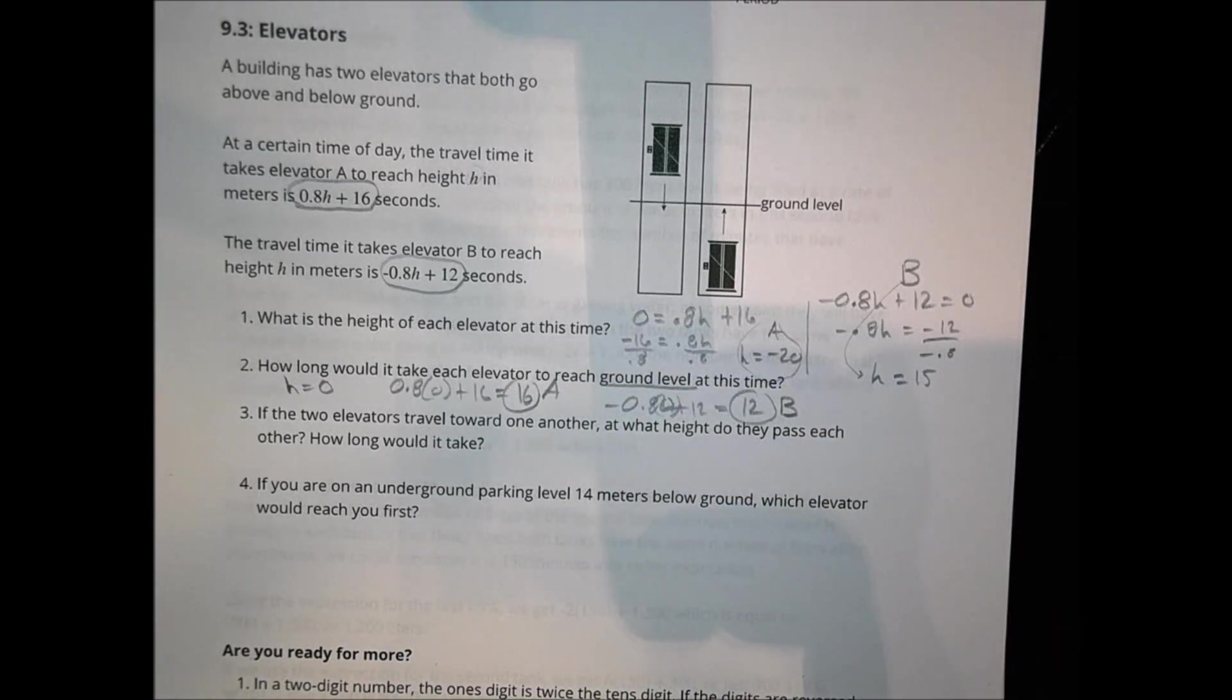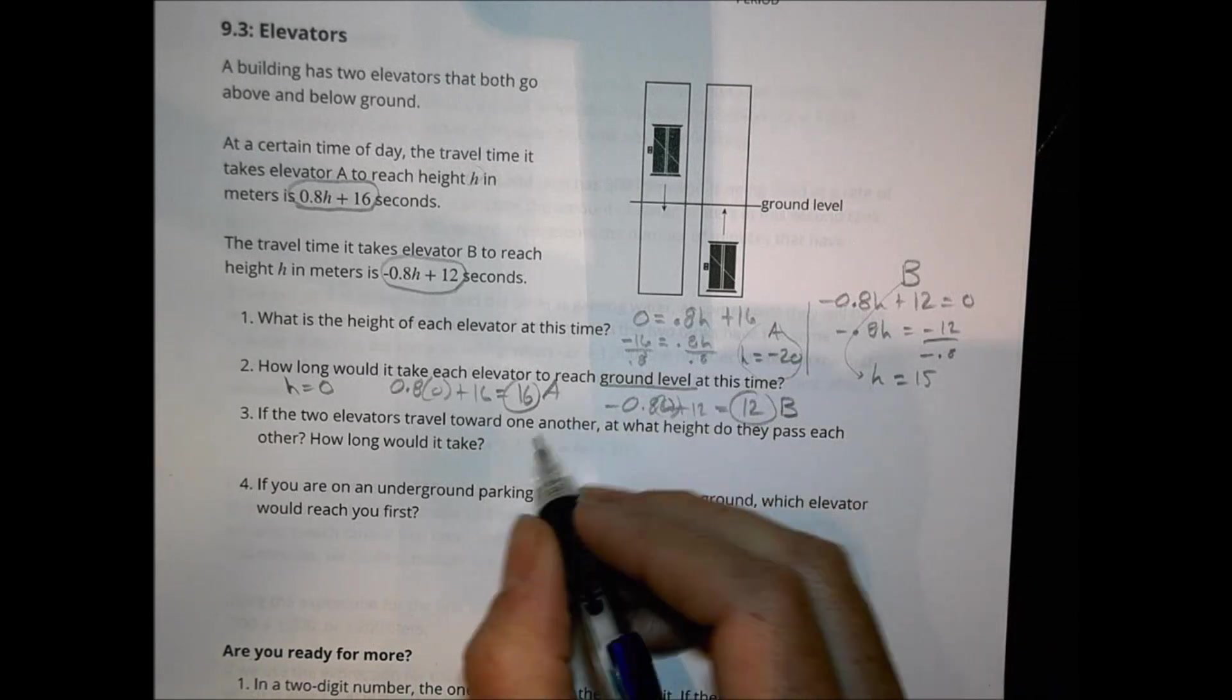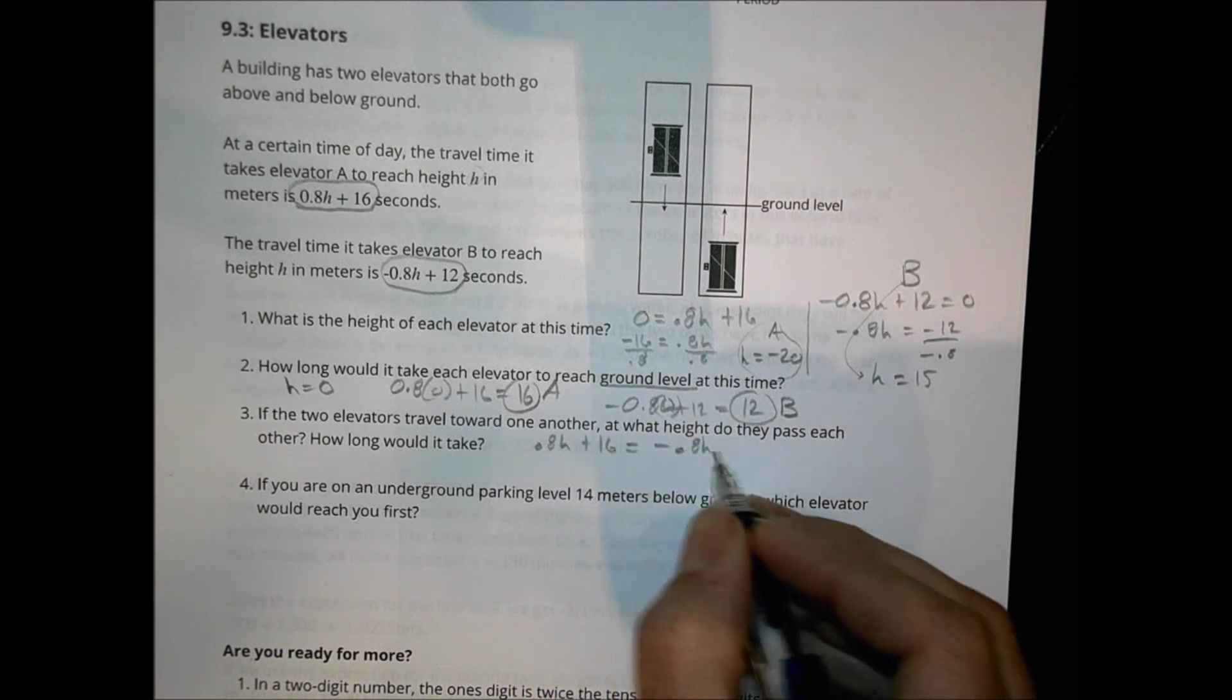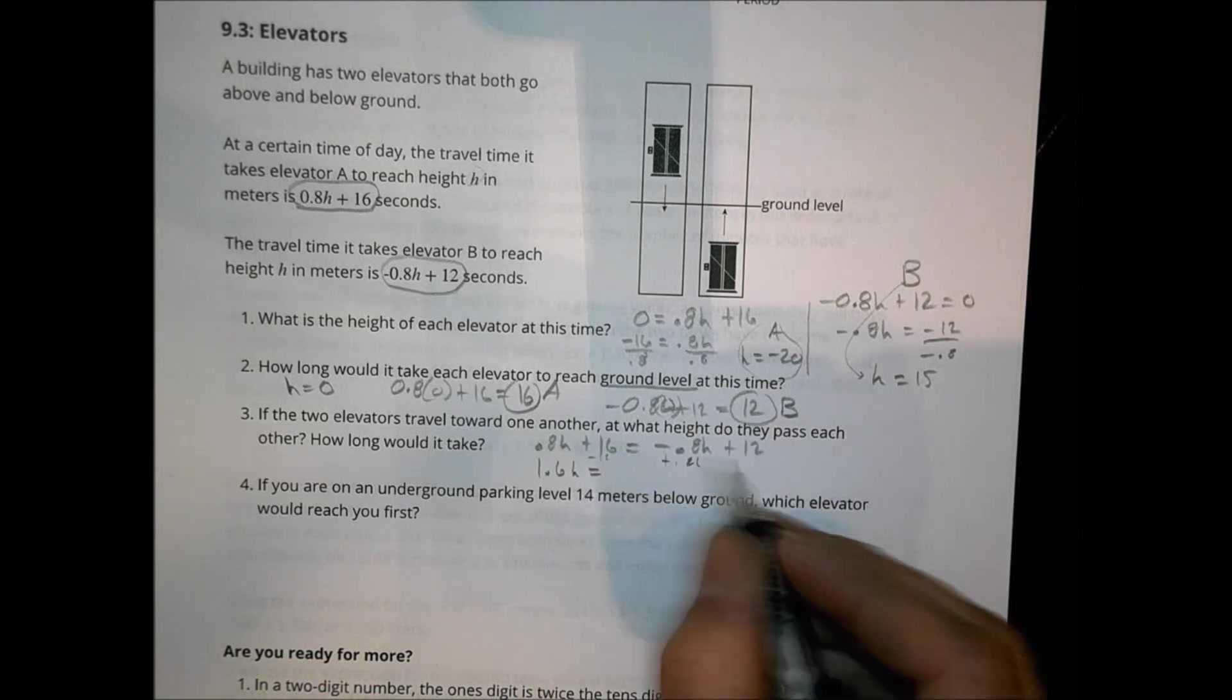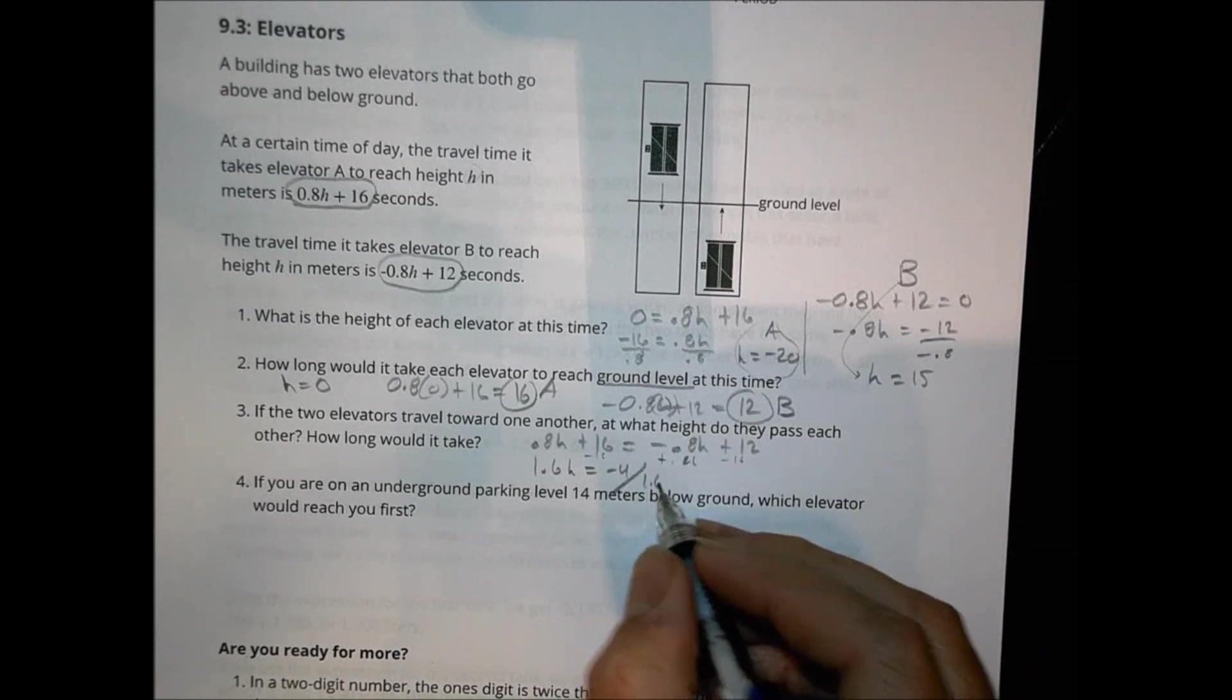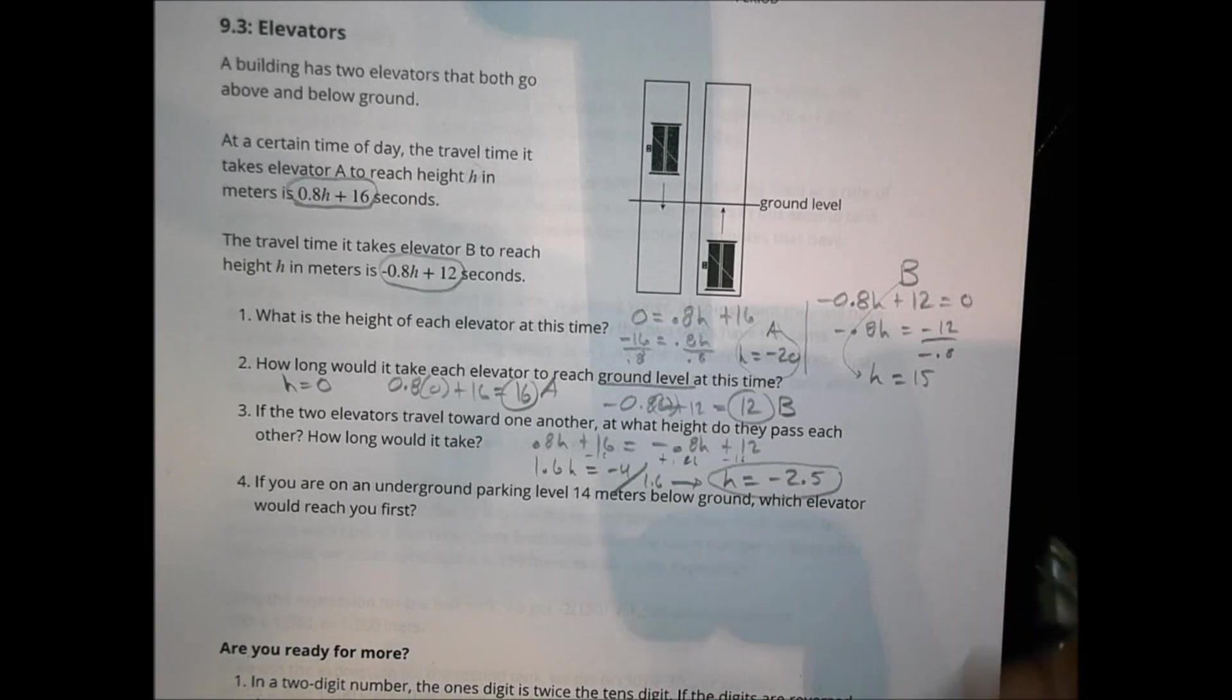If the two elevators travel towards one another, at what height do they pass each other? And how long would that take? That passing each other idea is when are they going to be equal to one another? So we'll do 0.8H plus 16 equals negative 0.8H plus 12. We're going to add 0.8H over here, so we're going to have a 1.6H equals, subtract 16, we have minus 4. I divide minus 4 by 1.6, and we find out that H is now going to be equal to negative 2.5. So they're going to pass each other at a height of negative 2.5 meters.